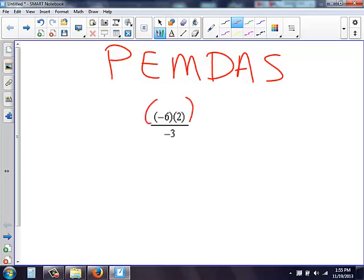So with a fraction here, if you need to, you need to put parentheses. The top and the bottom are separate. So I look at the top, all I have is negative 6 times 2. So I'm going to multiply those numbers.